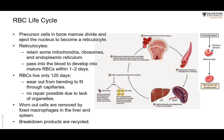The RBC life cycle begins in the bone marrow, where precursor cells called proerythroblasts — 'blast' meaning forming cells — produce red blood cells. These cells lose their nucleus and are released into the blood as reticulocytes.